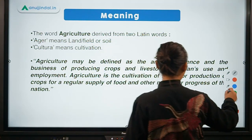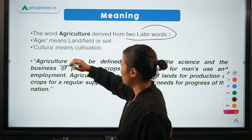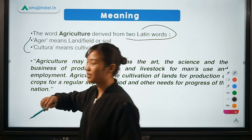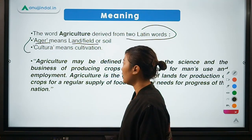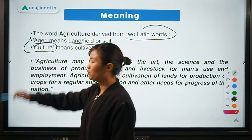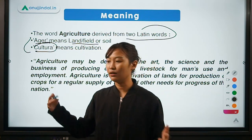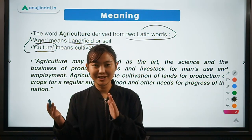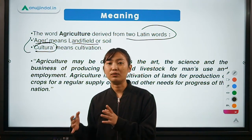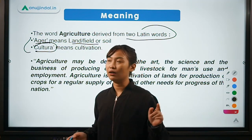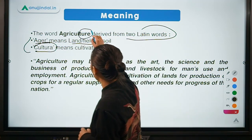The word agriculture originated from Latin. The two Latin words used are 'ager', which means the land, the field, or the soil, and 'cultura', which means cultivation. So if you combine these two words, we get the definition already — cultivation of land, or cultivation in the field or in the soil.